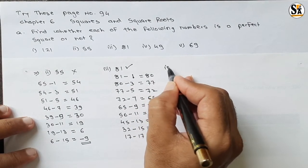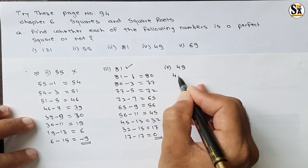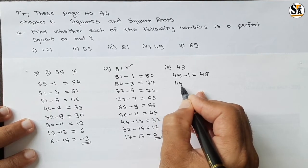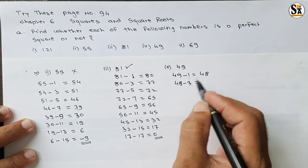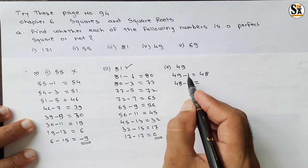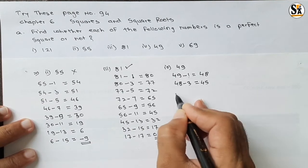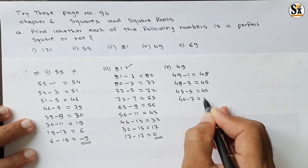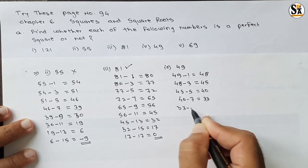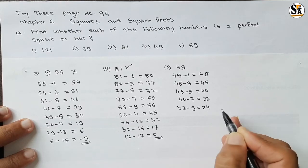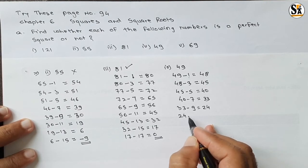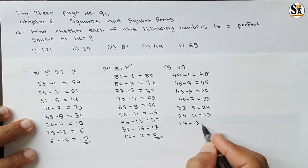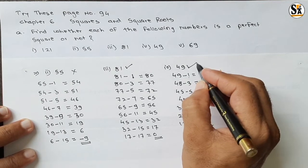See the next number: 49. Follow the same procedure: 49 minus 1 gives 48. 48 minus 3 gives 45. 45 minus 5 gives 40. 40 minus 7 gives 33. 33 minus 9 gives 24. 24 minus 11 gives 13. 13 minus 13 gives 0. We are getting answer 0, so 49 is a perfect square number.